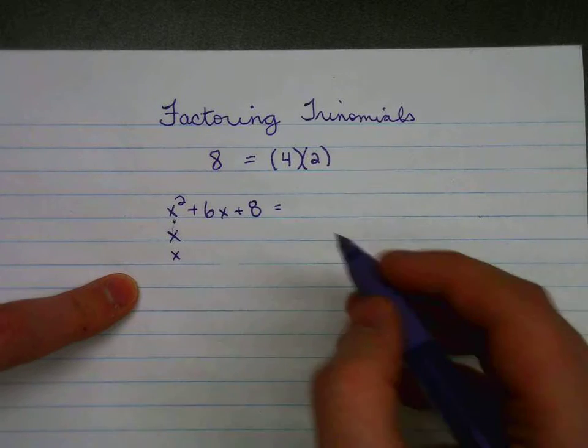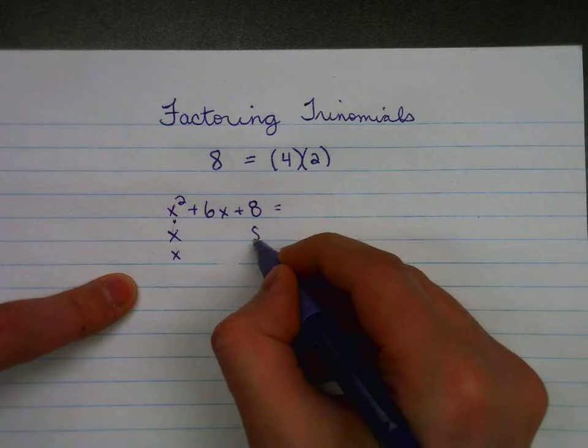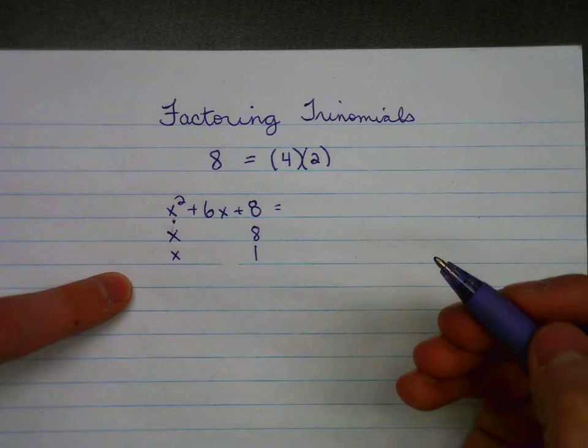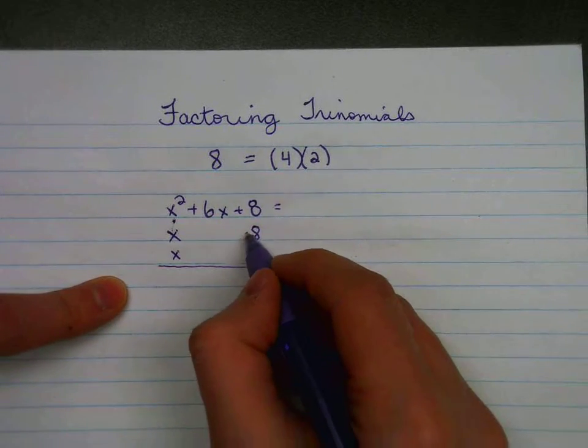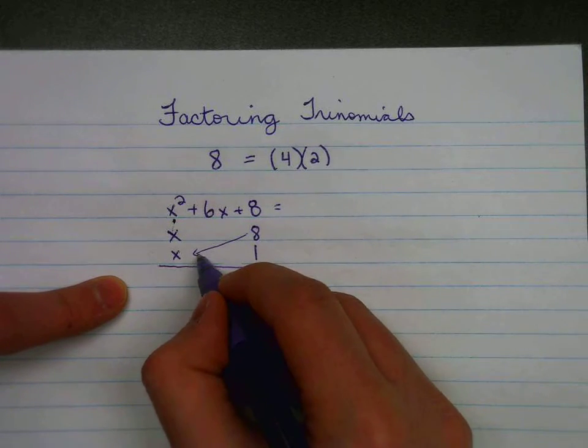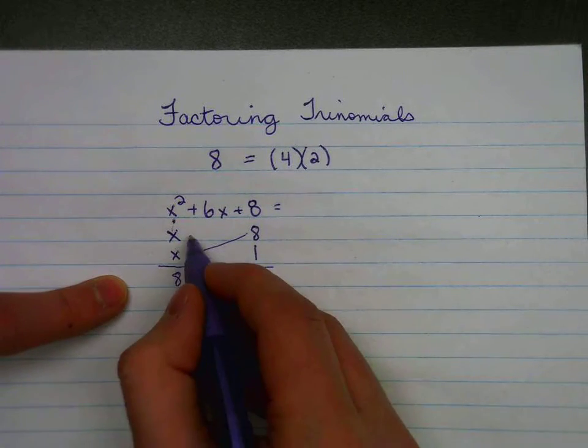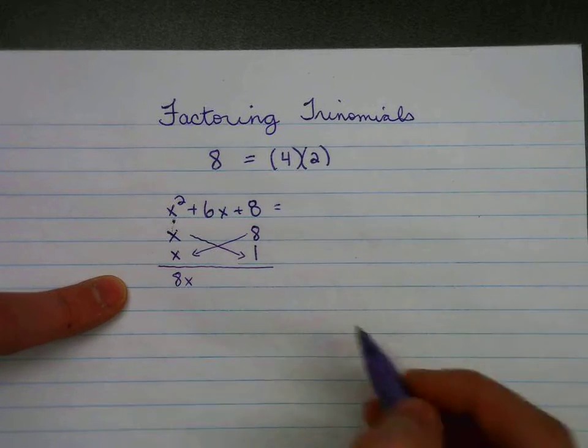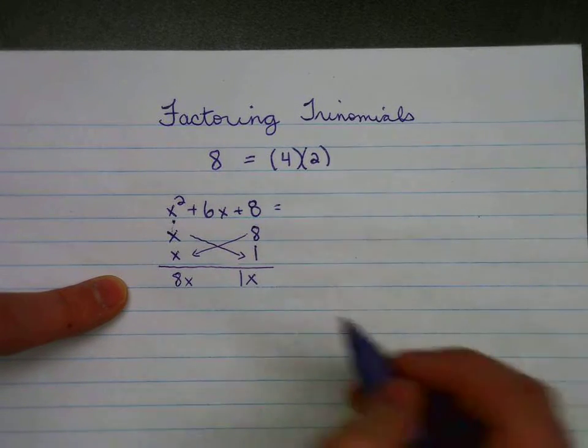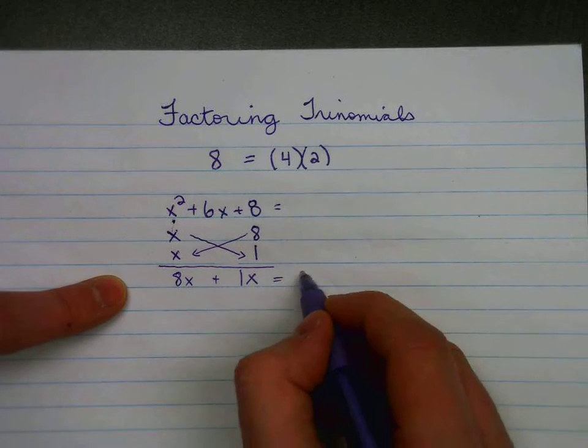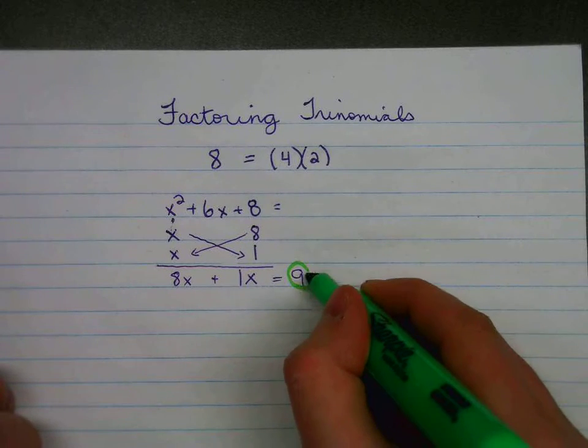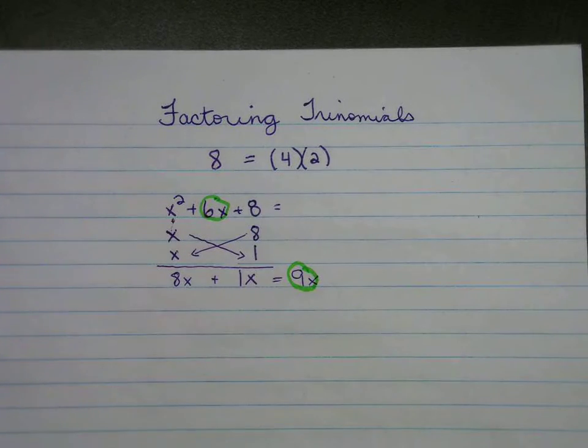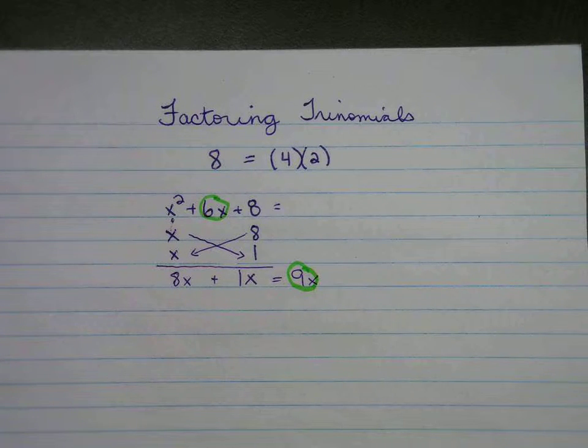I'll do this wrong the first time. If I were to try the 8 and the 1 option, there is a way to test to see if this is the right choice. What we can do is diagonally multiply the 8 times the x, diagonally multiply the x times the 1, which gives 1x, add them together which gives you 9x. What you're looking for is for your sum of your diagonal products to match your middle term. In this case they don't, so this is not the correct choice.